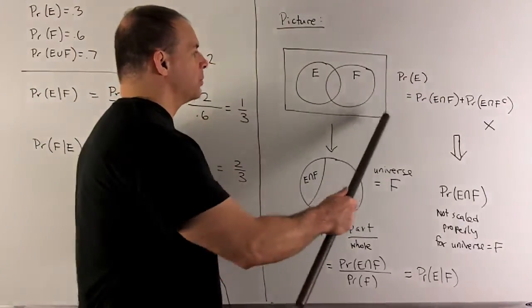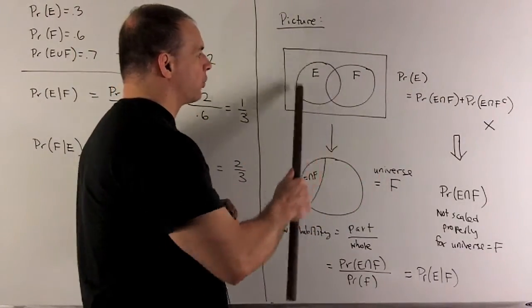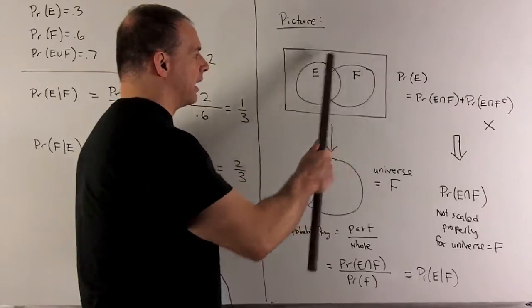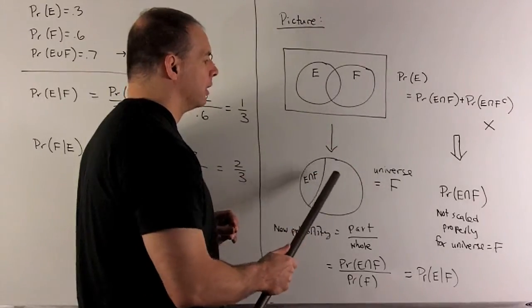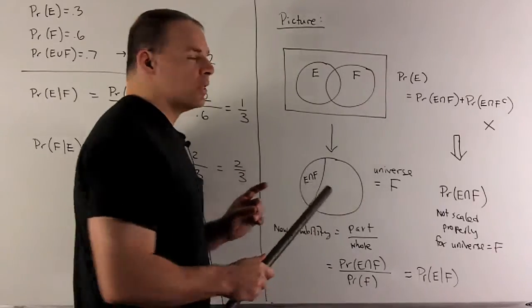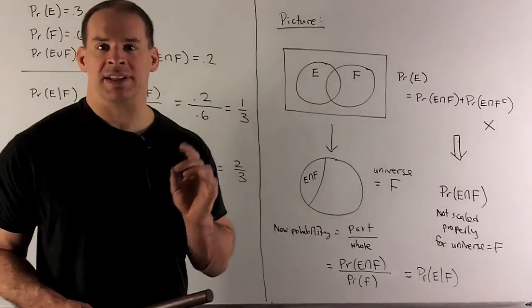So the idea is going to be I go from this picture here, and then I'm just going to throw away everything else if I'm not in F. So I get this picture here now. So our universe is F, the only part of E that survives is E intersect F.